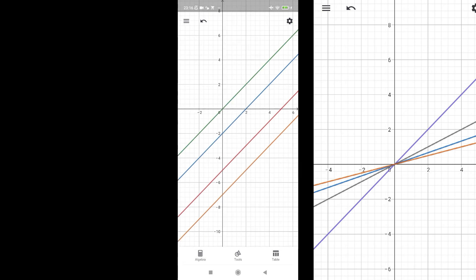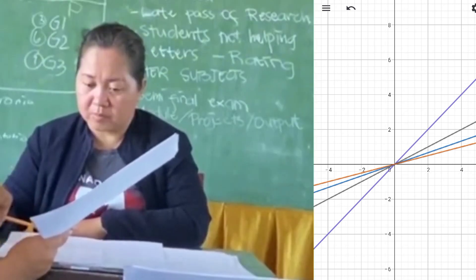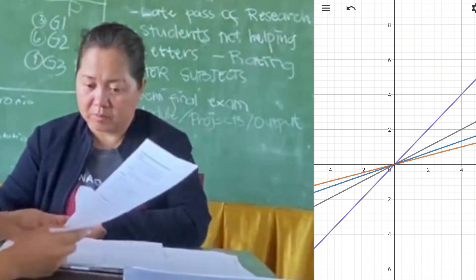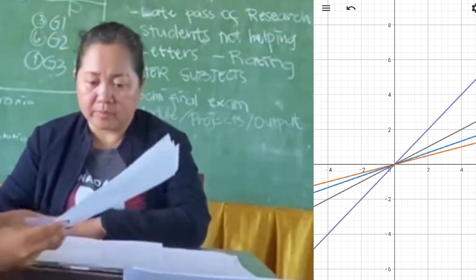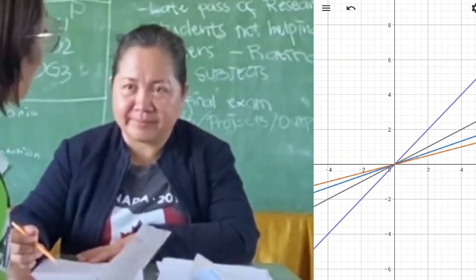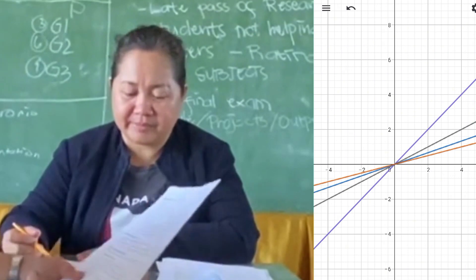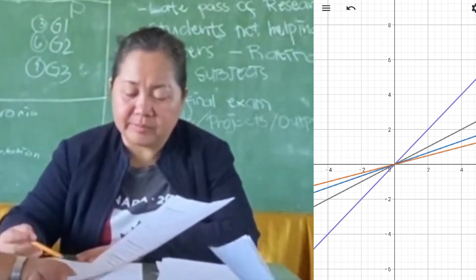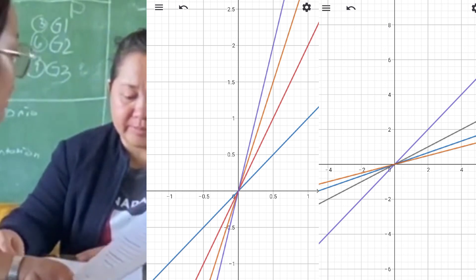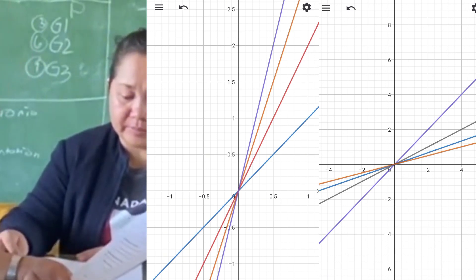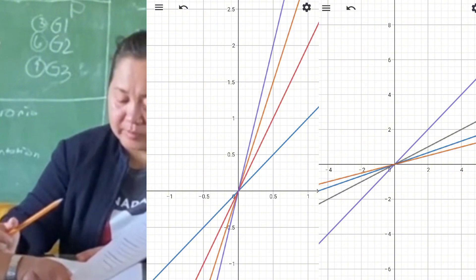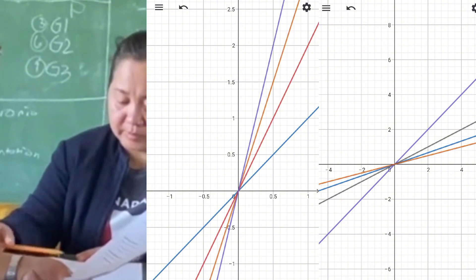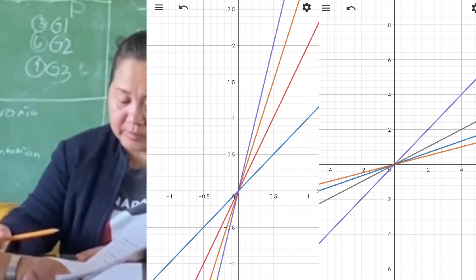Using this GeoGebra graphing software, you can observe that for set A, as the slope increases from 1 to 4, the lines become steeper. For set B, as the slope decreases from 1 to one-fourth, the lines become less steep. Based on the graphs, we can formulate the following conjectures: for lines of the form y equals kx, where k is a constant, if k is greater than 1, the line becomes steeper as k increases.